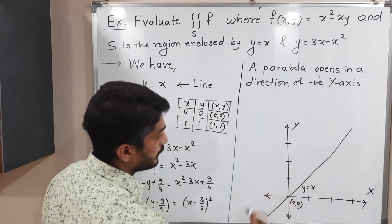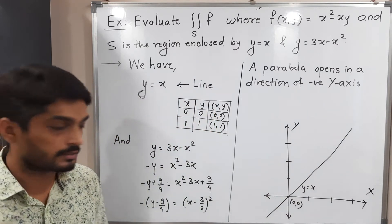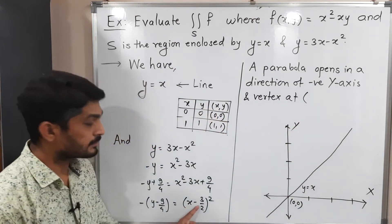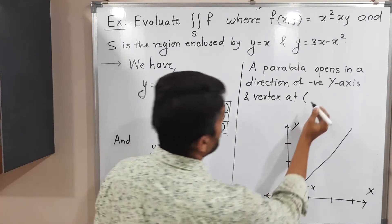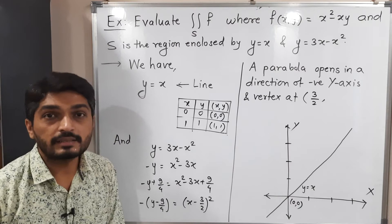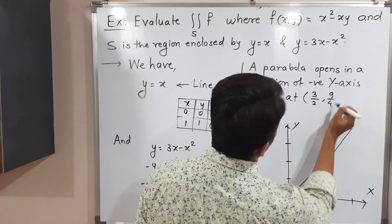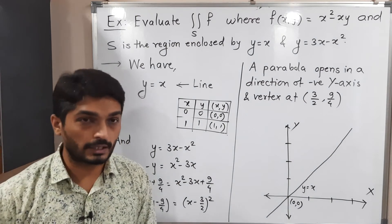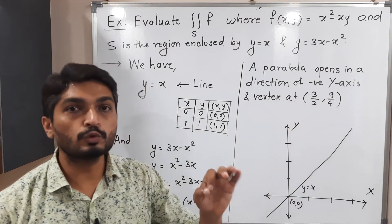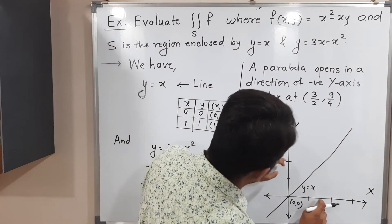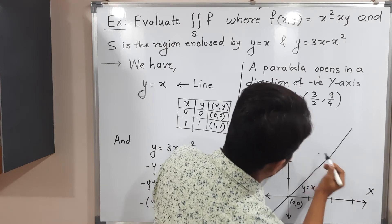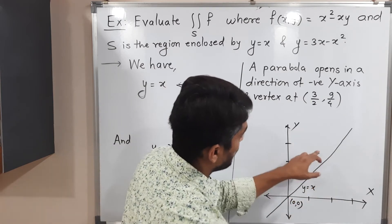Since it is not a standard parabola, it is shifted. The vertex is at x - 3/2 = 0 and y - 9/4 = 0, so vertex is at (3/2, 9/4). That means x = 1.5 and y = 2.25. The parabola has its peak at this vertex and opens downward from there.